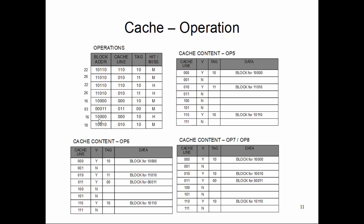The next block, 01000, maps to cache line 000 with a matching tag — that's a hit. Then for block address 10010, the tag is 10 and the cache line is 010. We look at cache line 010: it is valid. We compare the tag — the tag computed for this last row in the operation table is 10, whereas the tag stored in that cache line is 11. They don't match, so that's a miss. At this point, the corresponding cache line is replaced with block 10010, the tag is updated, and the data is then accessed from that cache line.